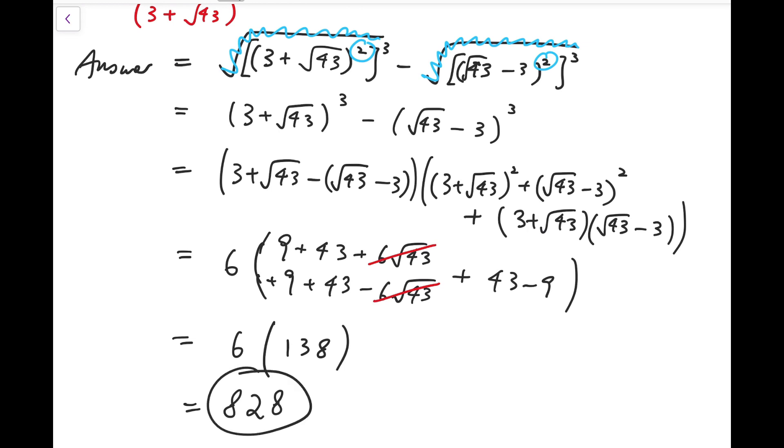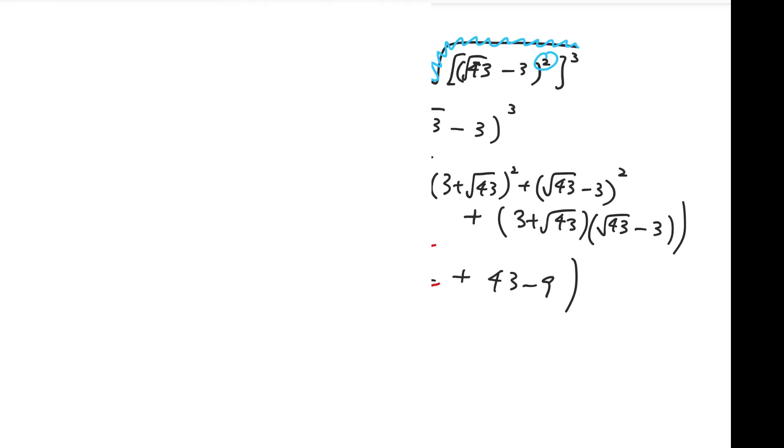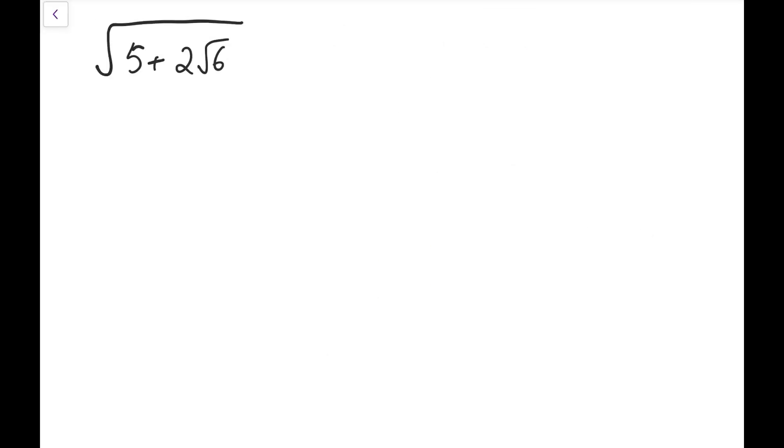Please continue watching if you're interested in how do we simplify these kind of surds, but of different numbers. For the general strategy to simplify surds of this form, let's take a look at this example. To simplify the square root of 5 plus 2 times square root of 6. So, the way to do this is that I'm going to let this to be square root of a added by square root of b.